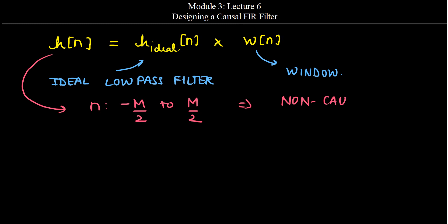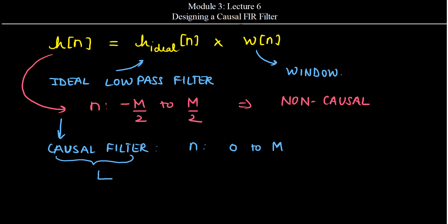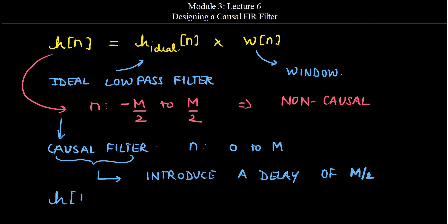To make this H of n a causal filter — that is, to make the range of n go from 0 to M — what we need to do is introduce a delay of M by 2 units. So for making it a causal filter, we need to introduce a delay of M by 2 units, giving us H of n minus M by 2.